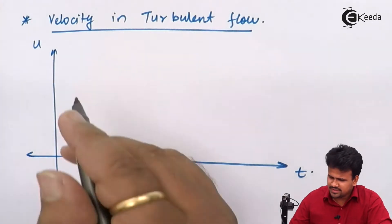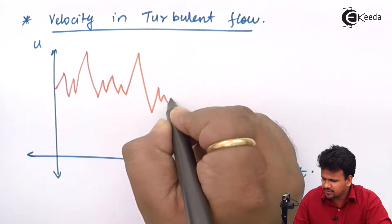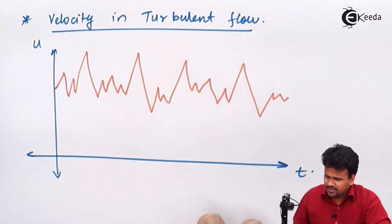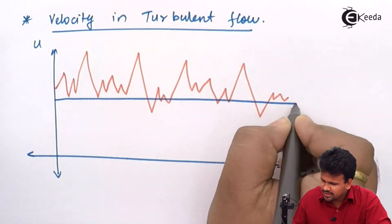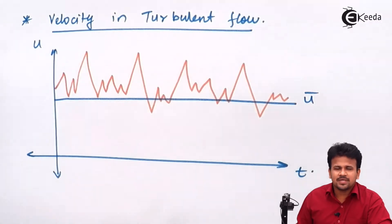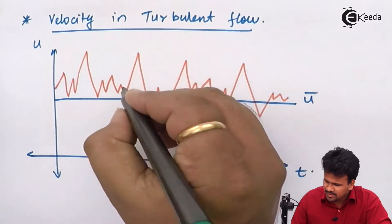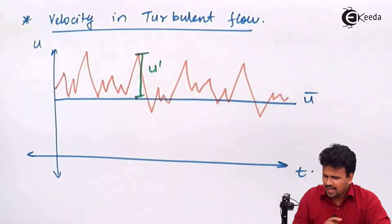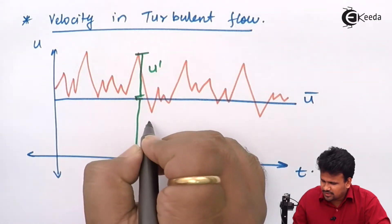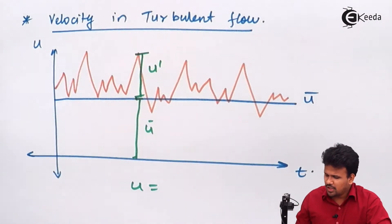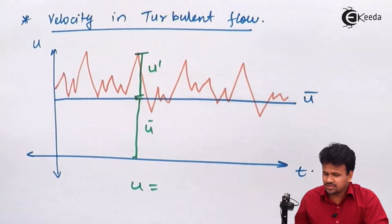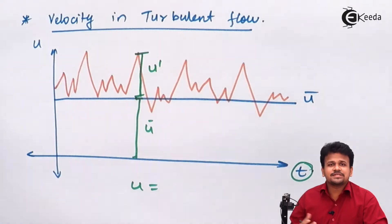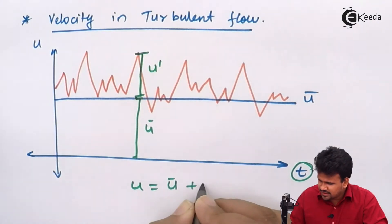In the velocity versus time graph, we can see there will be a fluctuating velocity in turbulent flow. We can conclude that there will be a mean velocity. This mean velocity will be denoted by u-bar, and at any given point of time this mean velocity will be added with some fluctuating velocity. The total of mean velocity and fluctuating velocity gives us the instantaneous velocity u, written as u = u-bar + u-dash.